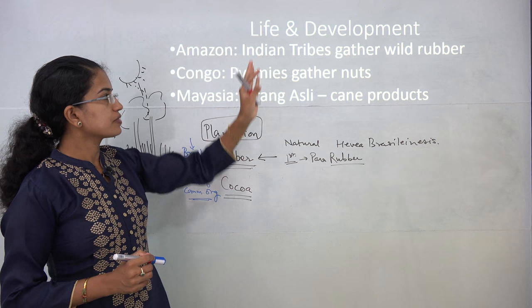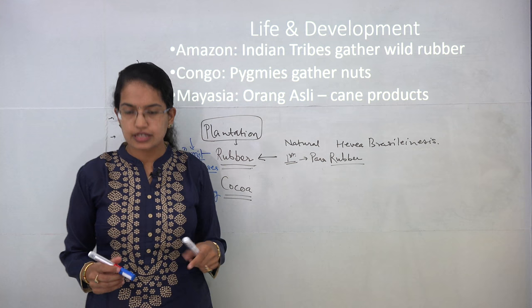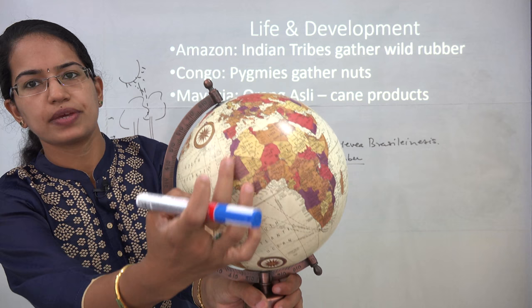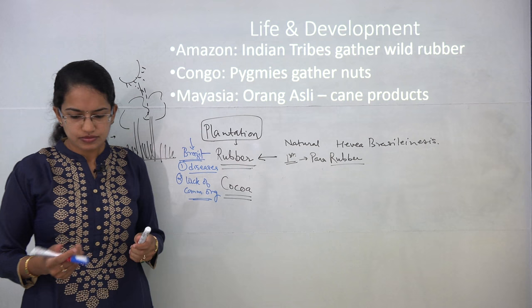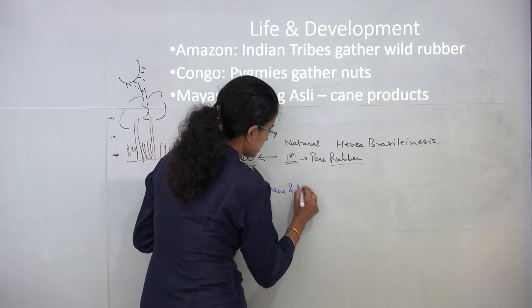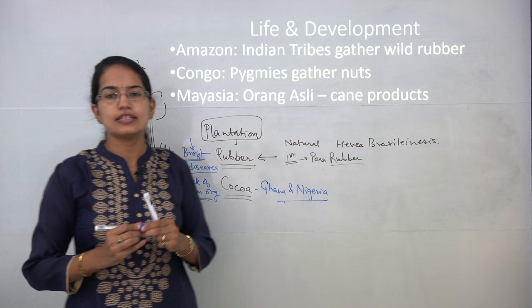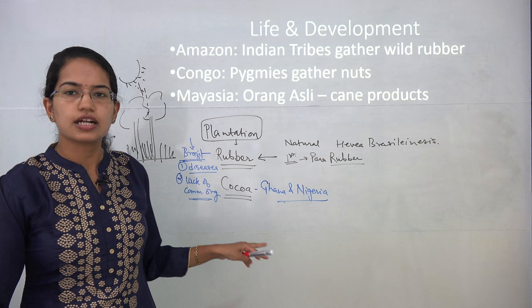Cocoa is mainly grown in West Africa. Ghana and Nigeria are the major producers and worked as plantation cultivation regions, located near the Gulf of Guinea.